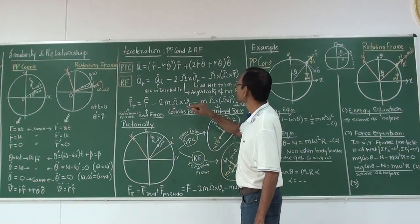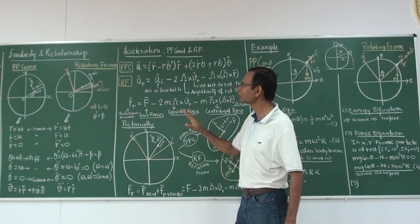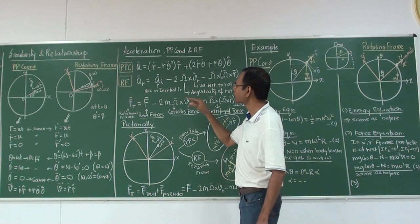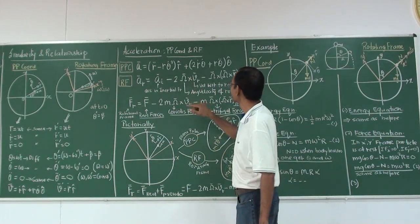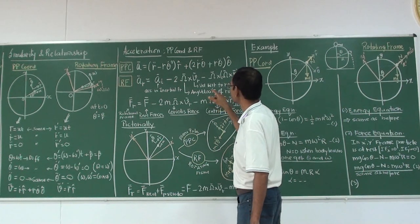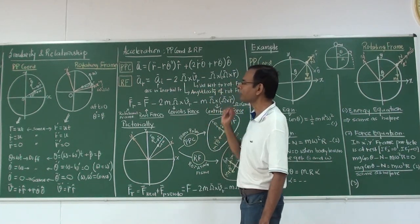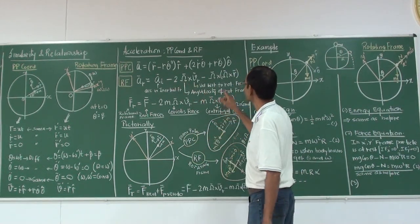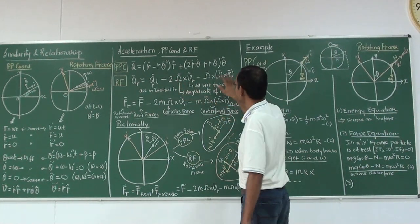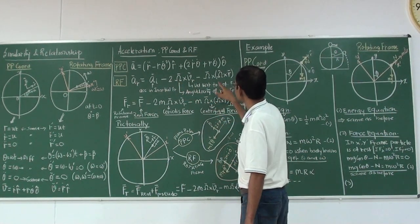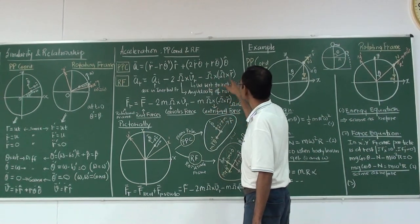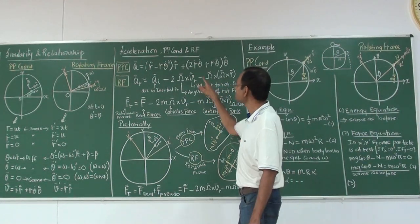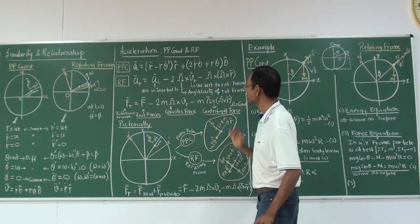In the rotating frame, acceleration is given by the expression: A_i equals A_r plus 2 omega cross V_r, plus omega cross omega cross R. Here A_i is the acceleration in the inertial frame, omega is the angular velocity of the rotating frame, and V_r is the velocity of the particle with respect to the frame. The term 2 omega cross V_r is the Coriolis term, and omega cross omega cross R is the centrifugal term.